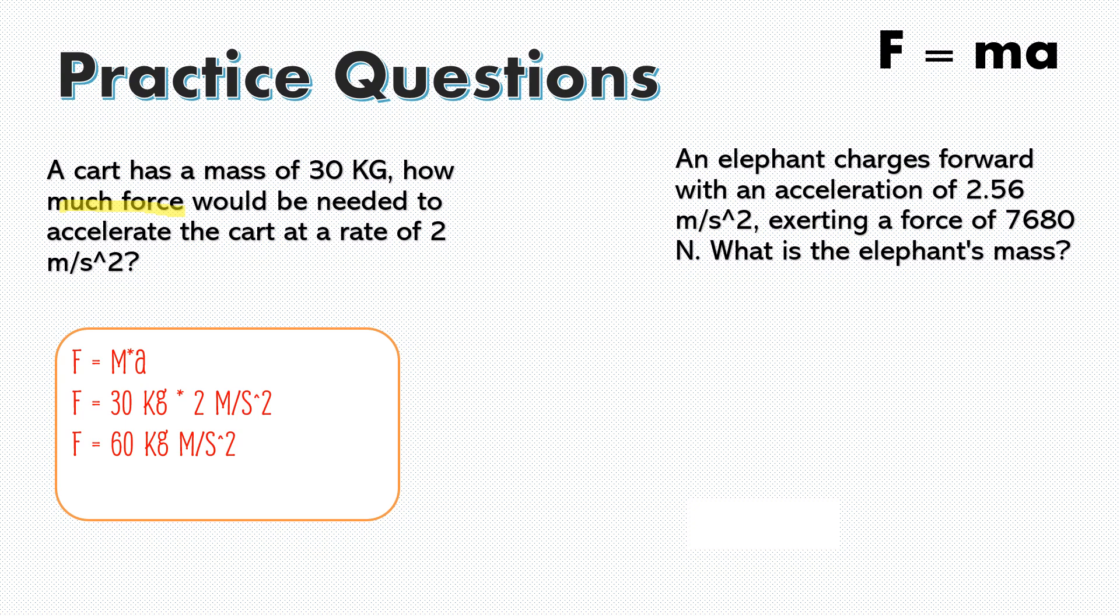So force is equal to mass times acceleration. The next thing we're going to do is substitute our variables. So our mass is 30 kilograms, and our acceleration is two meters per second squared. So now that we have our variables, we're just going to multiply 30 and two to get 60. And our units, it looks like this. Kilograms times meters per second squared. And this is actually just going to be equal to newtons. So our final answer will come out to be force is equal to 60 newtons.